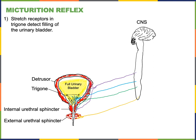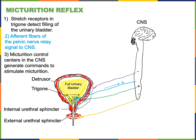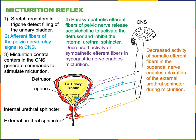The micturition reflex starts with stretch receptors in the trigone detecting filling of the urinary bladder and relaying that information through afferent fibers of the pelvic nerve to control centers in the central nervous system. These centers generate commands stimulating parasympathetic efferent fibers of the pelvic nerve to release acetylcholine, activating the detrusor and inhibiting the internal urethral sphincter, while also decreasing sympathetic activity in the hypogastric nerve and somatic activity in the pudendal nerve.